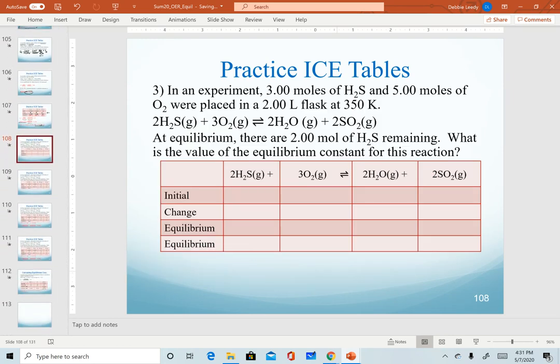For our next example, this is similar to one we've already worked, where we are given initial quantities of reactants. Notice they are in moles, so we need to divide by the volume to get molarity. This is the problem that at the end of the previous video, I had the wrong problem up. Make sure you're working with the correct one. Similar idea for the two problems if you want to work both. We're not told anything about the products here, so we can only assume zero.